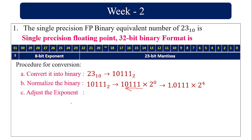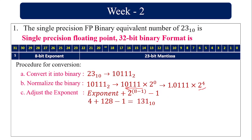Now adjust the exponent. The formula for adjusting the exponent is: unadjusted exponent plus 2 power 8 minus 1. For an 8-bit exponent, that is 8 minus 1 minus 1. The exponent here is 2 power 4, so 4 plus 2 power 7 — that is 128 minus 1 — gives 131. Find the binary equivalent of exponent 131.